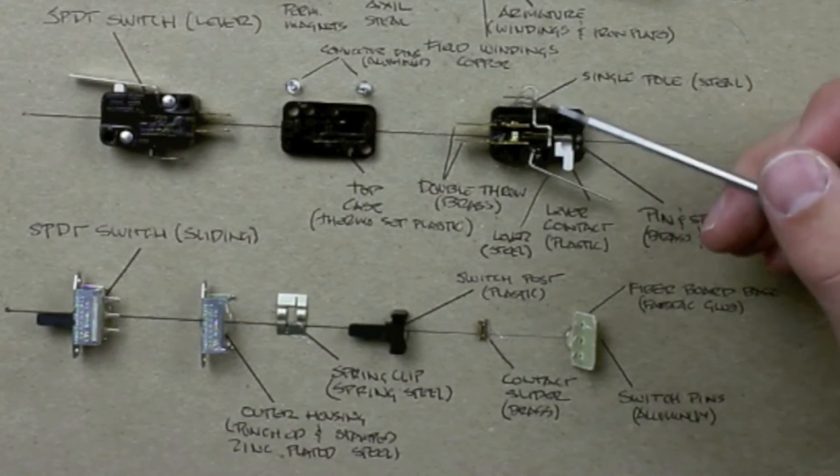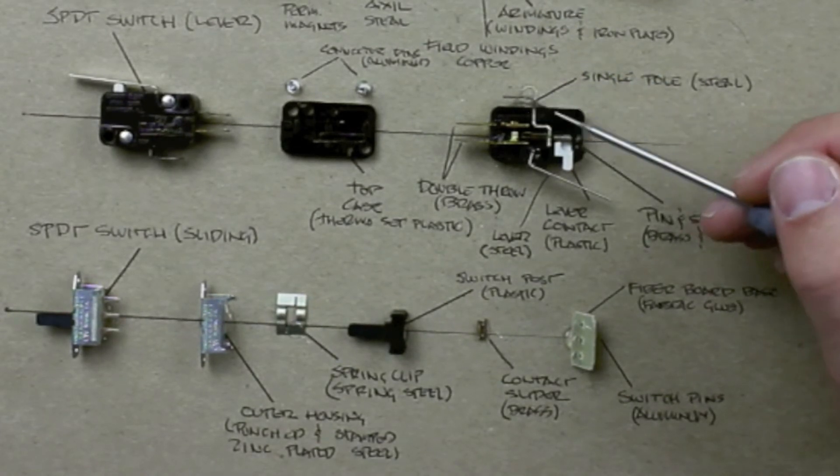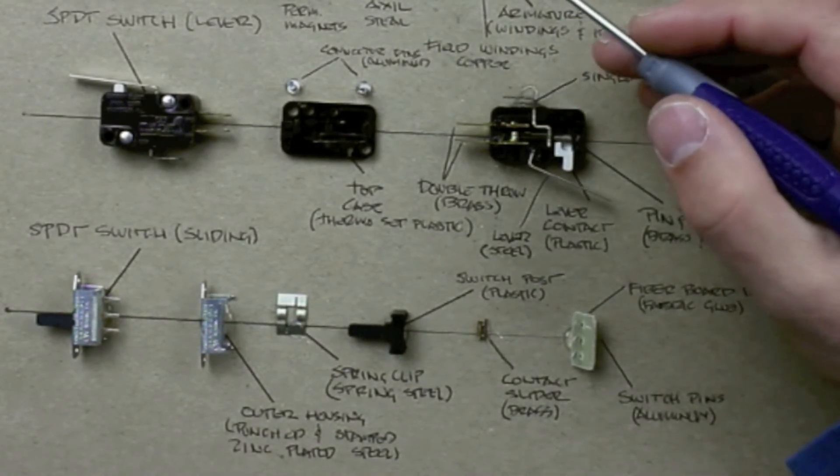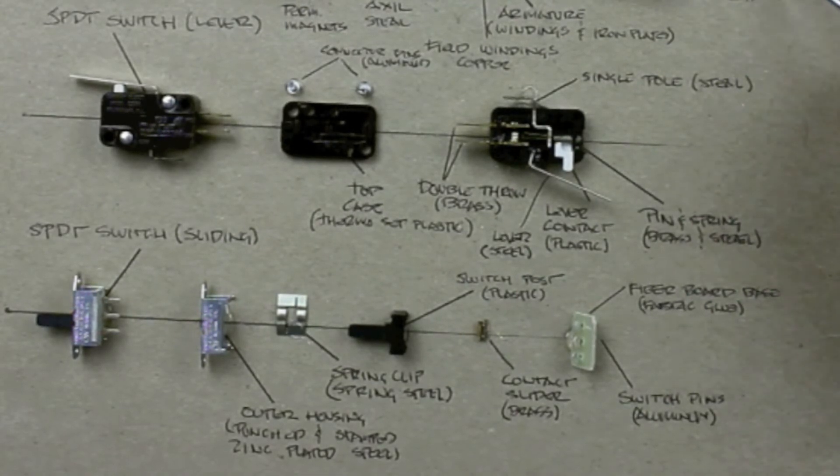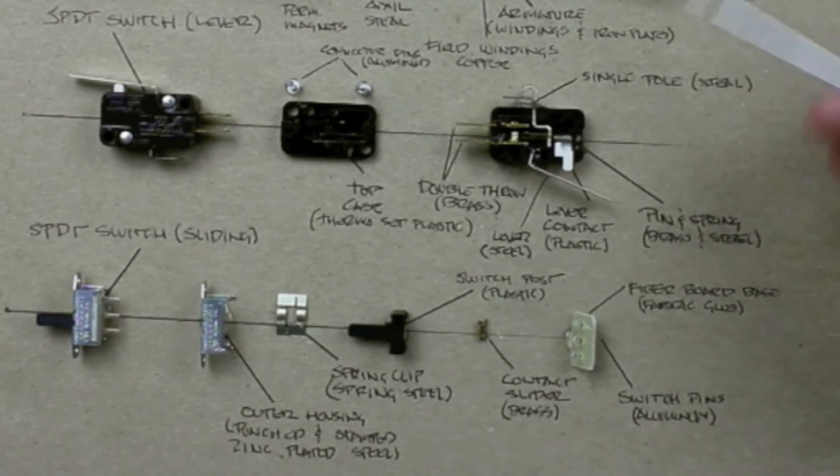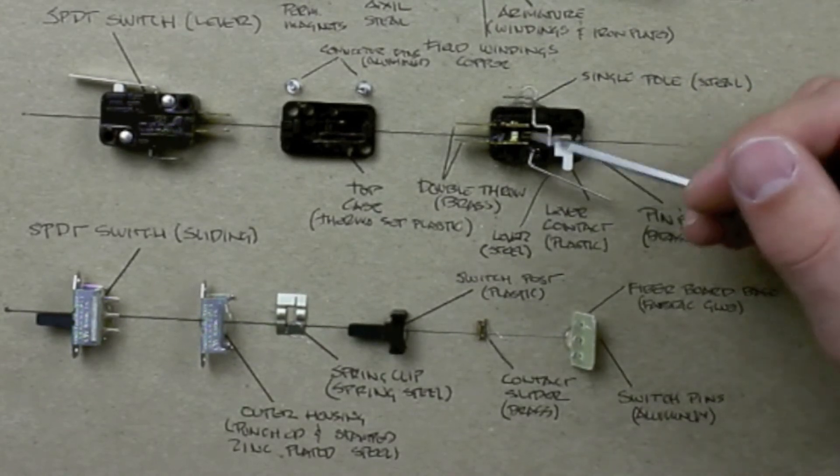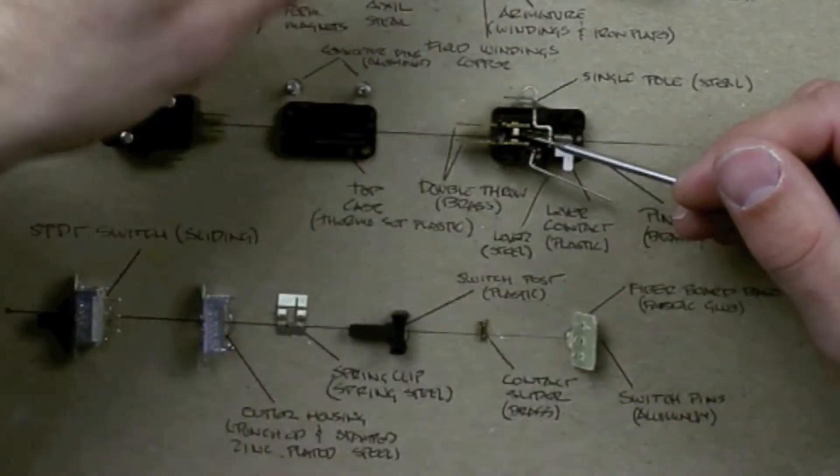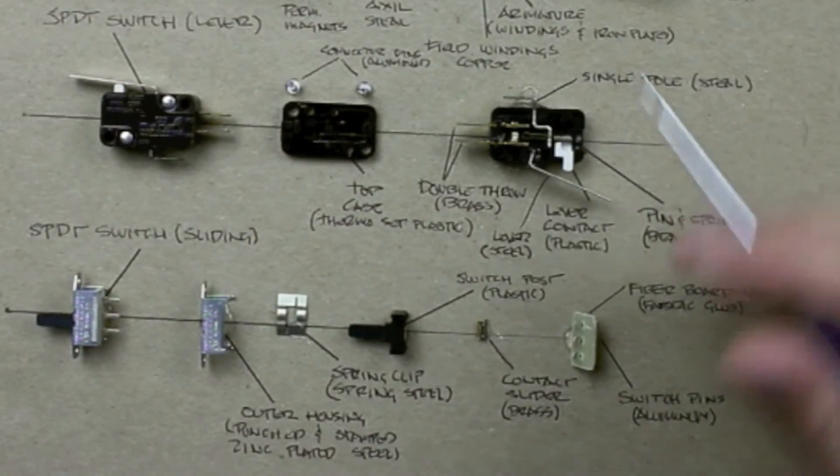Instead of flowing in one direction, it flows in the opposite direction. When the direction of the power changes, the motor's rotation changes. So the motor will back up. When the antenna hits a wall on our SpoutBot, it causes the spring to push, and that causes the electricity going through the switch to reverse, and that causes the motor to back up.